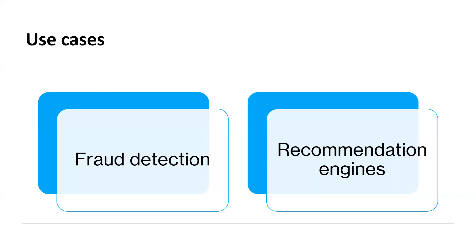The second use case is recommendation engines. Graph databases are a great choice for recommendation applications. We can store in a graph relationships between information categories such as customer interests, prints, and purchase history. We can use a highly available graph database to make product recommendations to a user based on which products are purchased by others who follow the same sport and have similar purchase history, or identify people who have a friend in common but don't know each other and make a friendship recommendation.